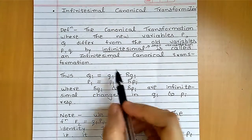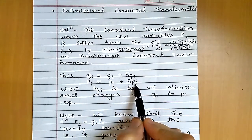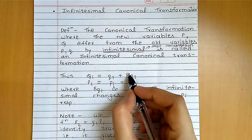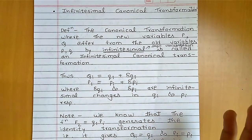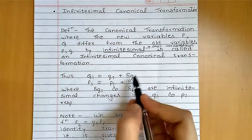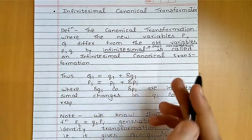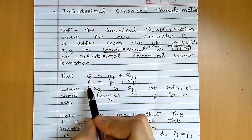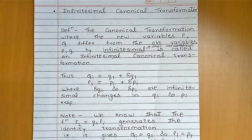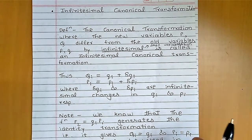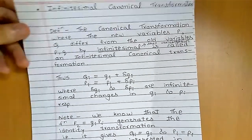So we write: capital Q_i is equal to small q_i plus delta q_i, and capital P_i is equal to small p_i plus delta p_i. As stated, new variables and old variables differ from each other by a very small — infinitesimal — quantity. Here delta q_i is the infinitesimal change in small q_i, and delta p_i is the infinitesimal change in small p_i.